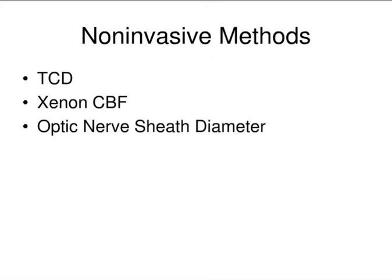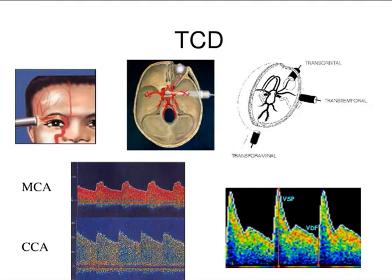How many people know what transcranial Doppler ultrasound is, have seen this before? So this is an ultrasound technique which allows you to look at and listen to the blood flowing inside of the brain, and you can have various kinds of probes that are placed on the brain.